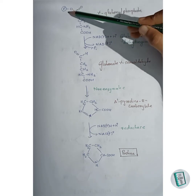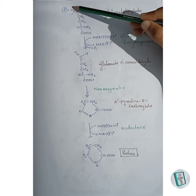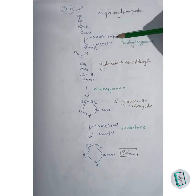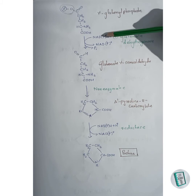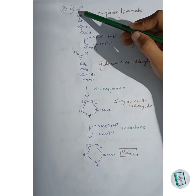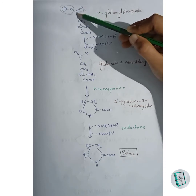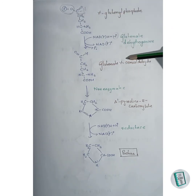In this step, NADPH₂ donates two of its hydrogens and gets converted to NADP⁺, and the phosphate group is released. One hydrogen from NADPH₂ is released along with the phosphate group, and the remaining hydrogen attaches directly to the carbon, forming an aldehyde group. Thus glutamate gamma semi-aldehyde is formed.